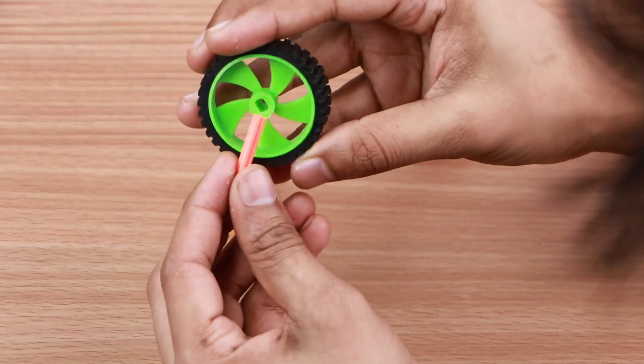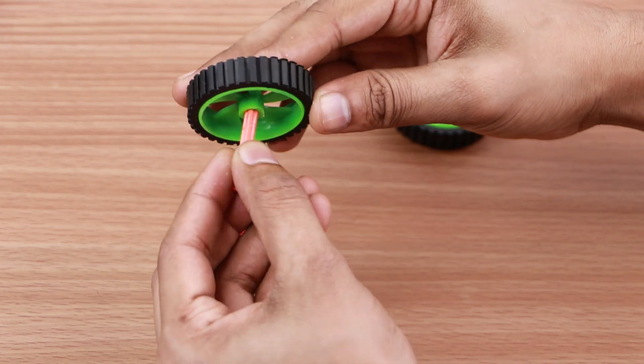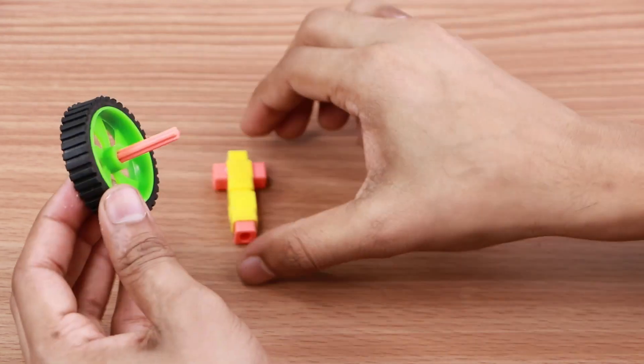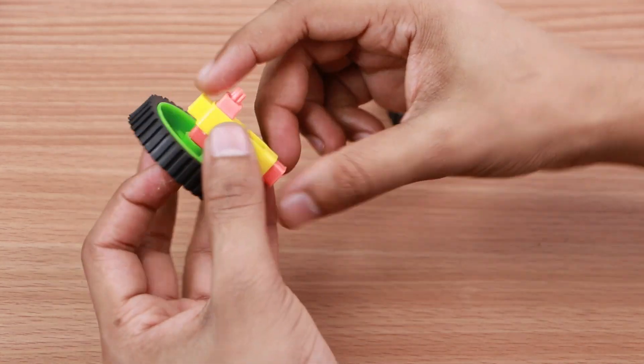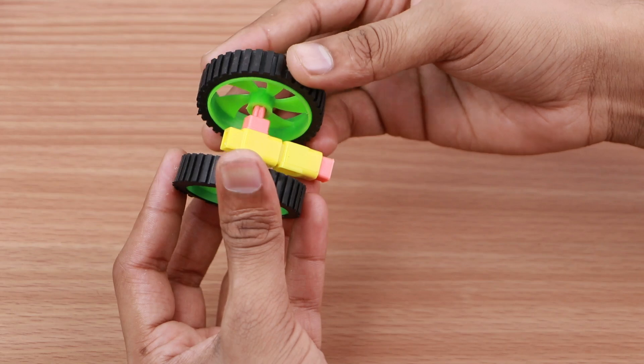Connect the small 30-millimeter axle to one wheel and pass the axle through the couplers. Finish this step by attaching the second wheel to the small 30-millimeter axle.